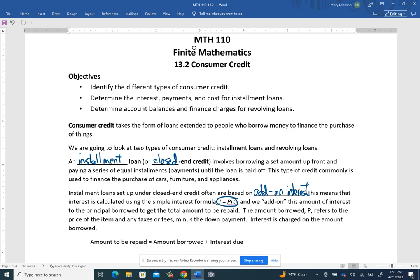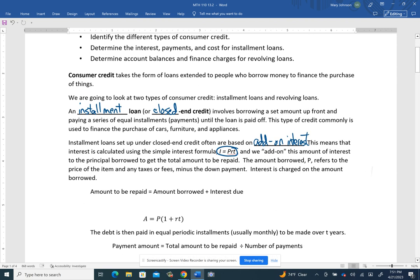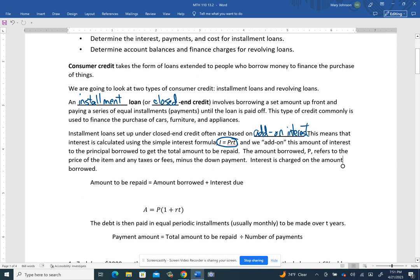And that'll tell us how much we have to repay. And then what we do is we take that and can calculate how much we want to pay each time period, whatever we agree on with the person we're buying the car, the furniture, or the appliances from.